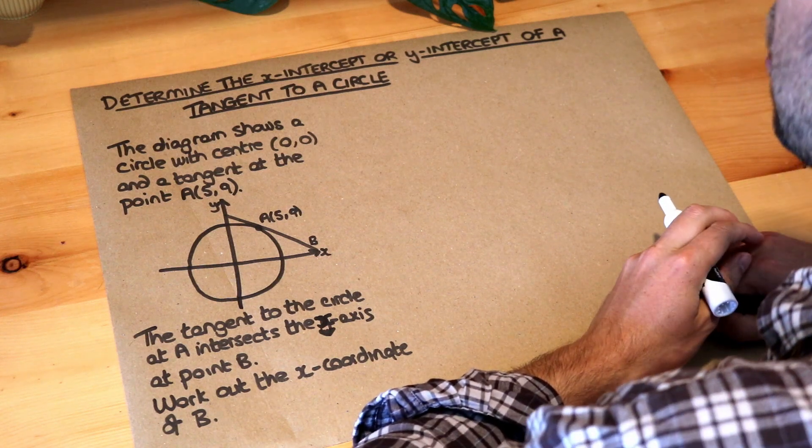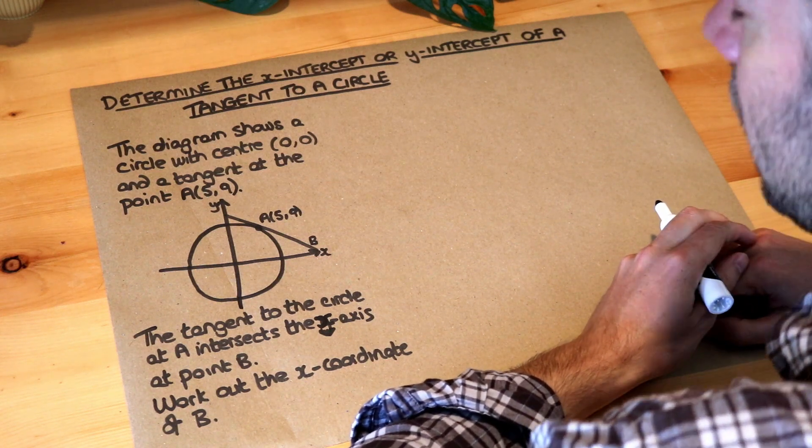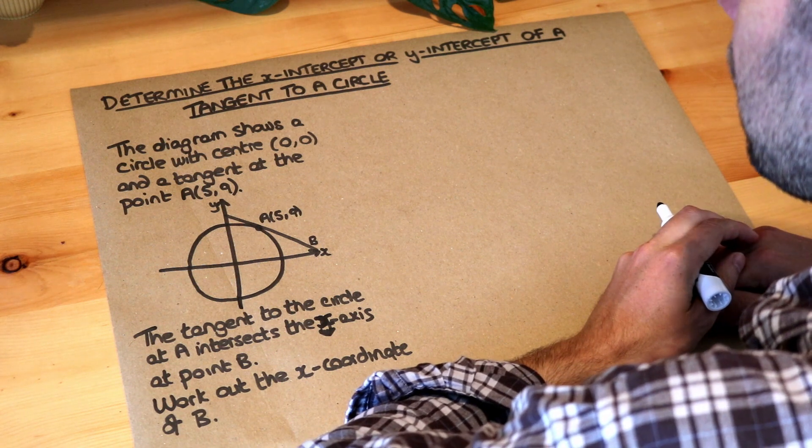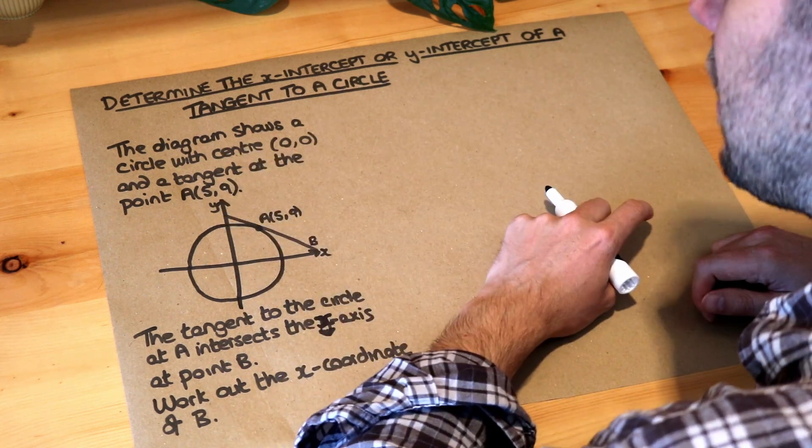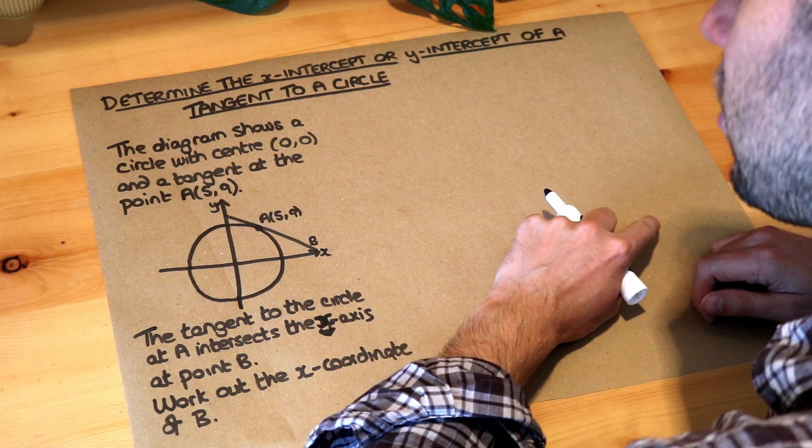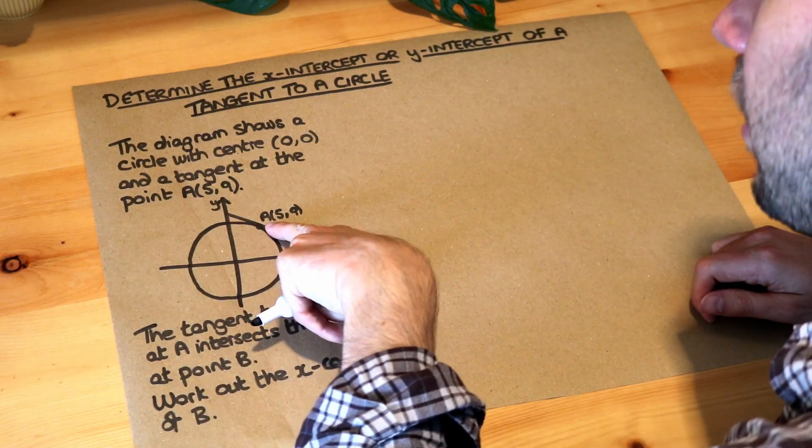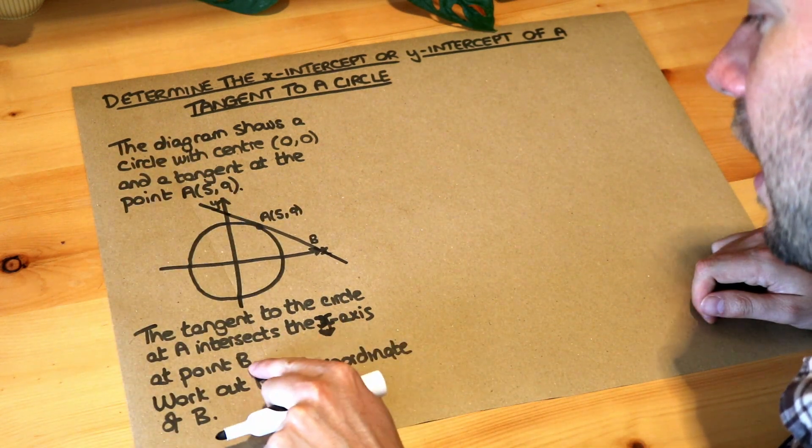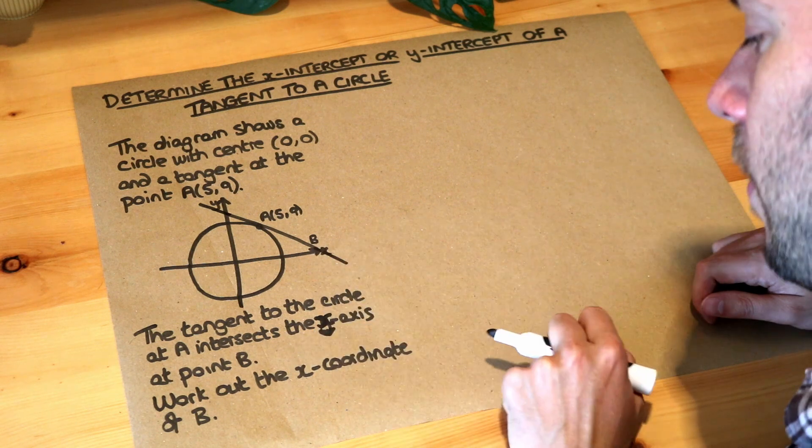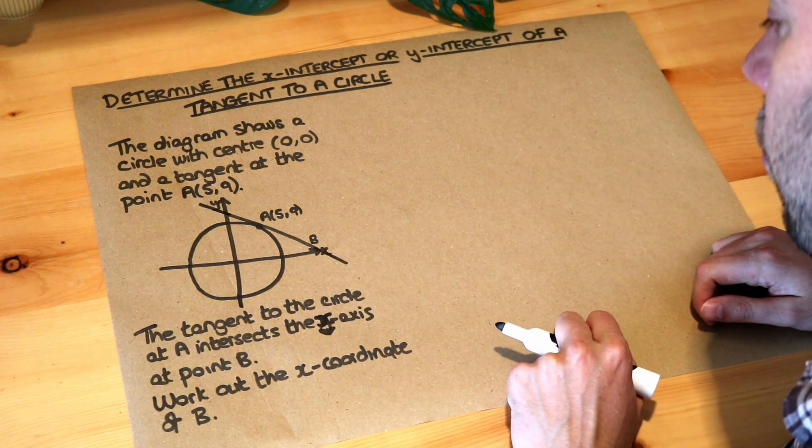Hello and welcome to this Dr Ross video on determining the x-intercept or y-intercept of a tangent to a circle. Let's read the question. The diagram shows a circle with centre (0,0) and a tangent at the point (5,9). The tangent to the circle, this line here, intersects the x-axis at the point B here. Work out the x-coordinate of B.